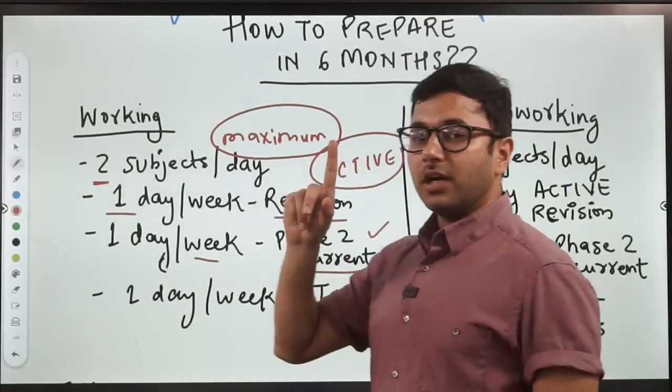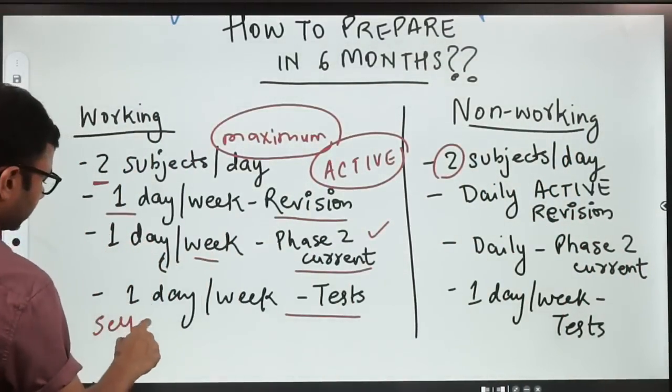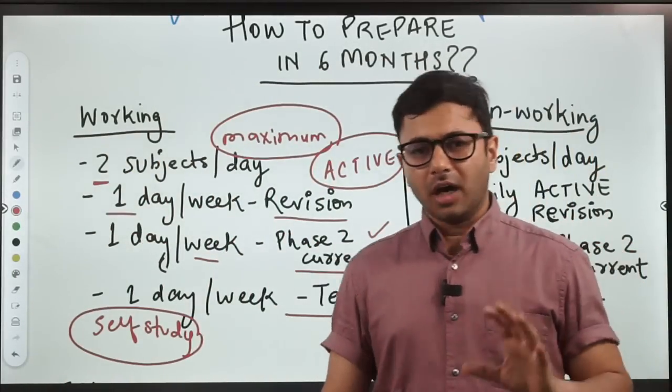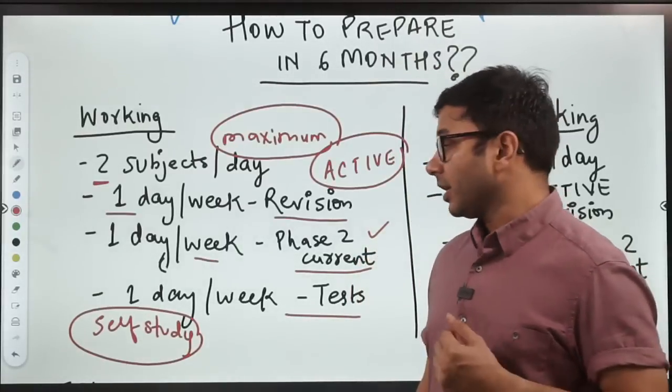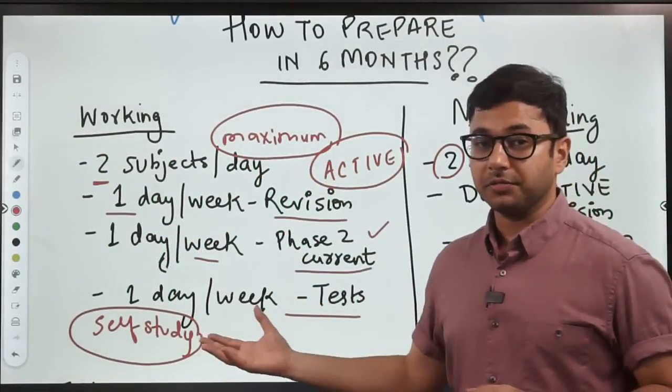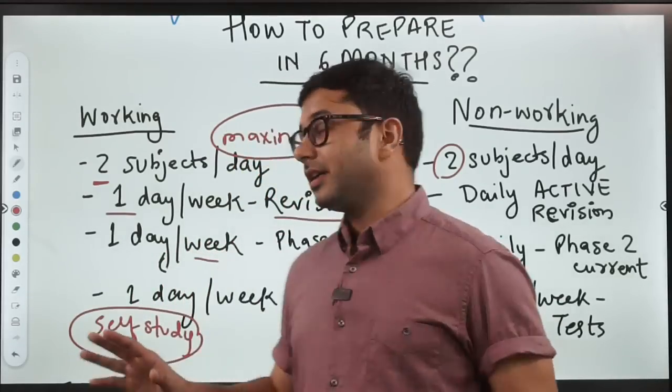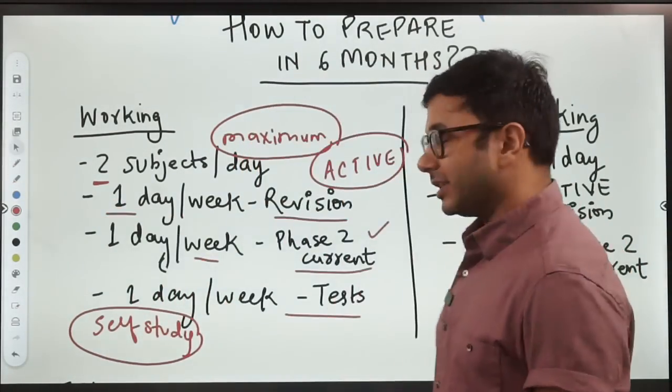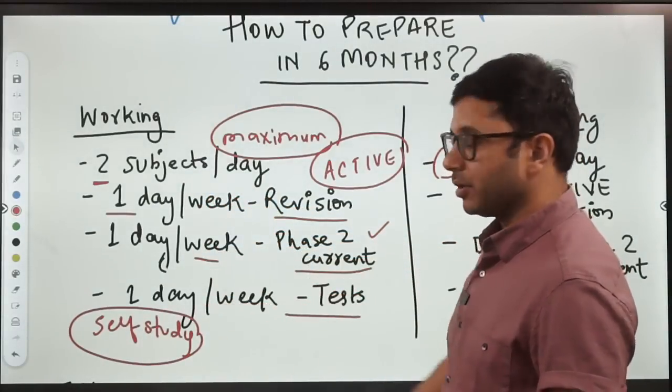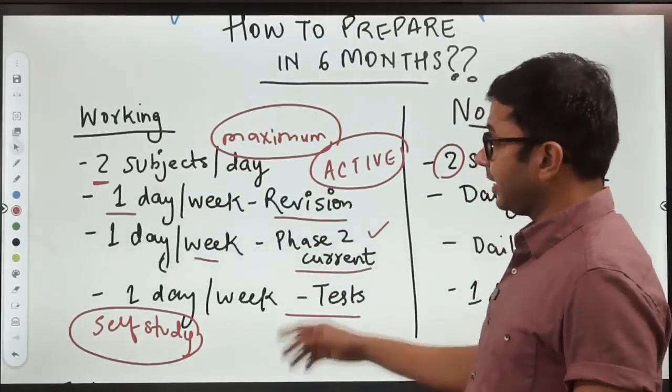One day per week you will keep for phase two current affairs and one day per week you're going to keep for tests. When you're going for self-study, this becomes problematic because you have to find sources through online search. Working student major division: per week two subjects per day, one day per week for revision, one day per week for phase two current, one day per week for tests. If you remove tests, then out of seven days, two days you're spending on revision and phase two current affairs, four to five days you're going to cover the syllabus.